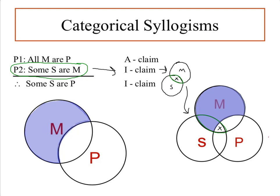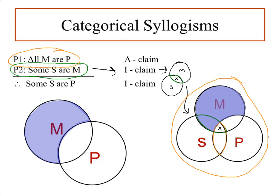Now we've got our entire argument accurately diagrammed, and we want to evaluate that diagram to determine if the conclusion is present. The question we're asking is: is the conclusion present after we've accurately diagrammed premise 1 and premise 2? And it is. The conclusion "some S are P" is this region here. We didn't diagram the conclusion directly, but the conclusion is diagrammed as a result of diagramming the two premises. There's an X in "some S are P," and so this argument is valid.